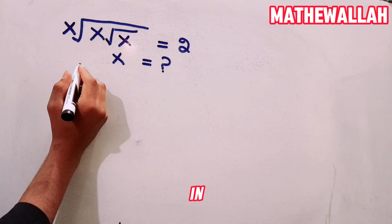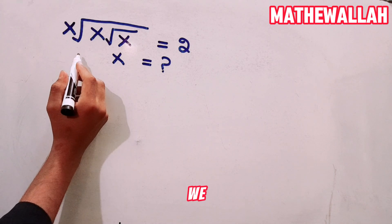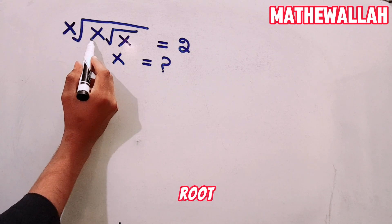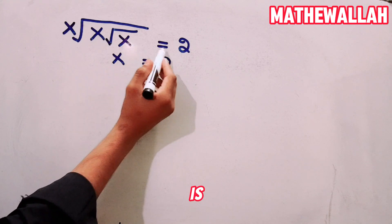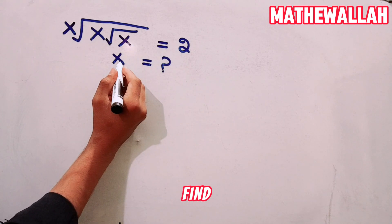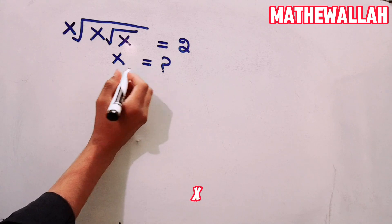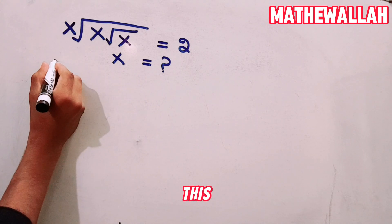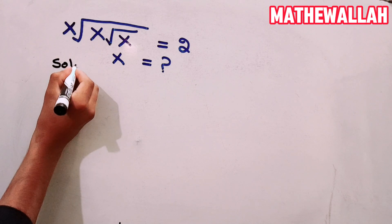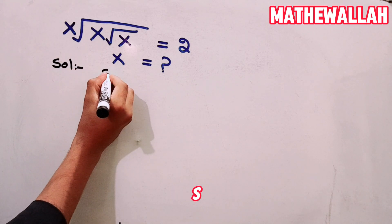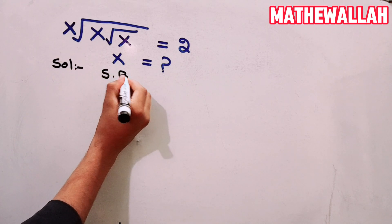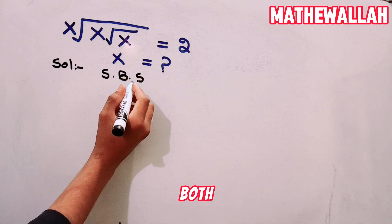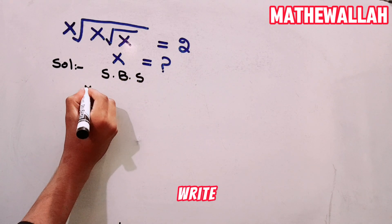Welcome back to another video. In this video we are going to solve this problem: x times square root x times square root x is equal to 2. We have to find the value of x. First of all we are going to solve this. We write the solution S.B.S. — squaring both sides.